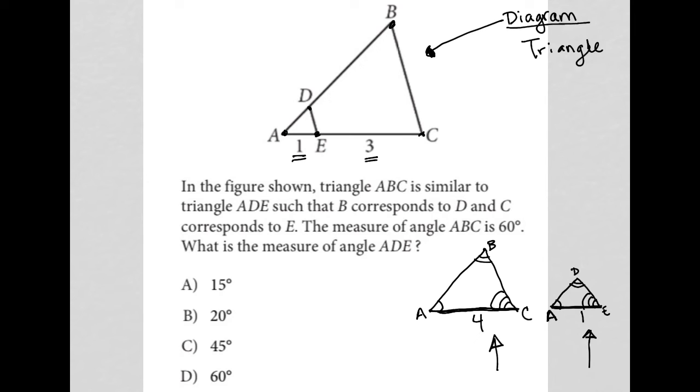So reading, going back to the question, it says the measure of angle ABC is 60 degrees. So ABC. So that's 60. So this is 60, which means choice or angle D is also 60.